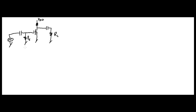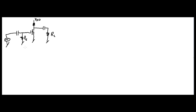Looking at this amplifier, you can see you have two RC circuits. You have one here and this is your output, and you have one over here and this is your input. So let's just look at the input FCL.